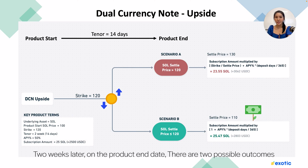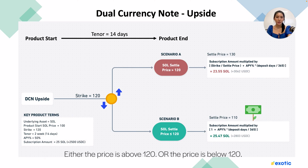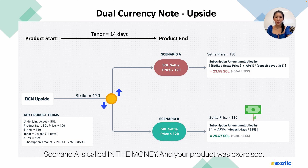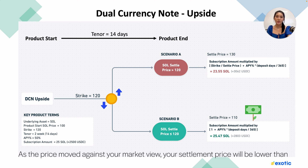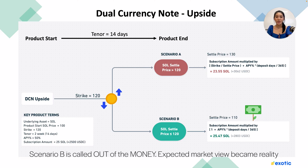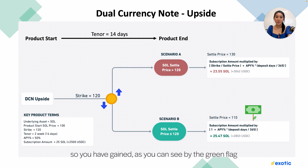Two weeks later, on the product end date, there are two possible outcomes: either the price is above 120 or the price is below 120. In both outcomes, you will earn your 50% APY yield. Scenario A is called in the money, and your product was exercised. As the price moved against your market view, your settlement amount will be lower by a ratio of strike over settled price. Scenario B is called out of the money — your expected market view became reality, so you have gained, as shown by the green flag.